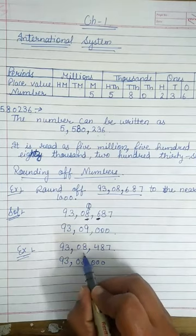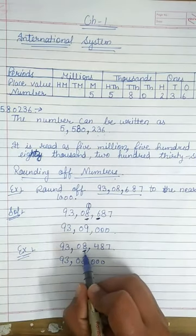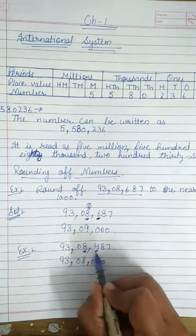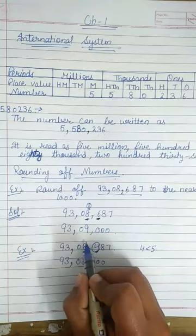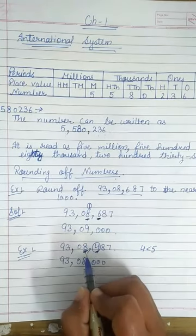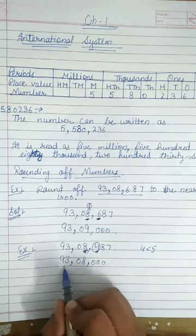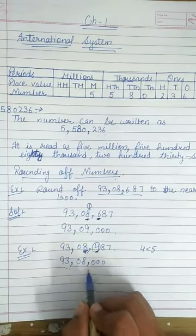then the answer is 93,8,000. Why? Because at the hundred place, the number is 4. 4 is less than 5. So we can't give carry to 8. That's why its answer is 93,8,000.